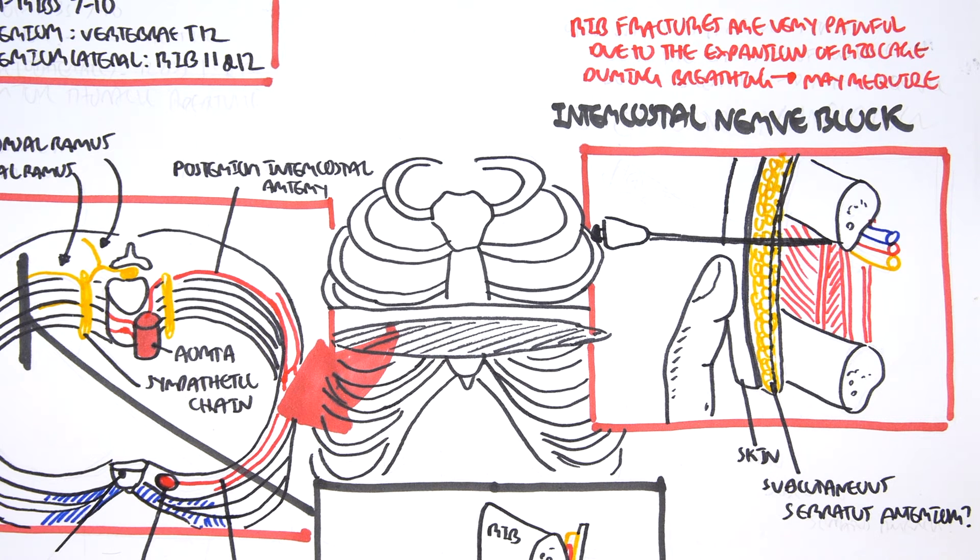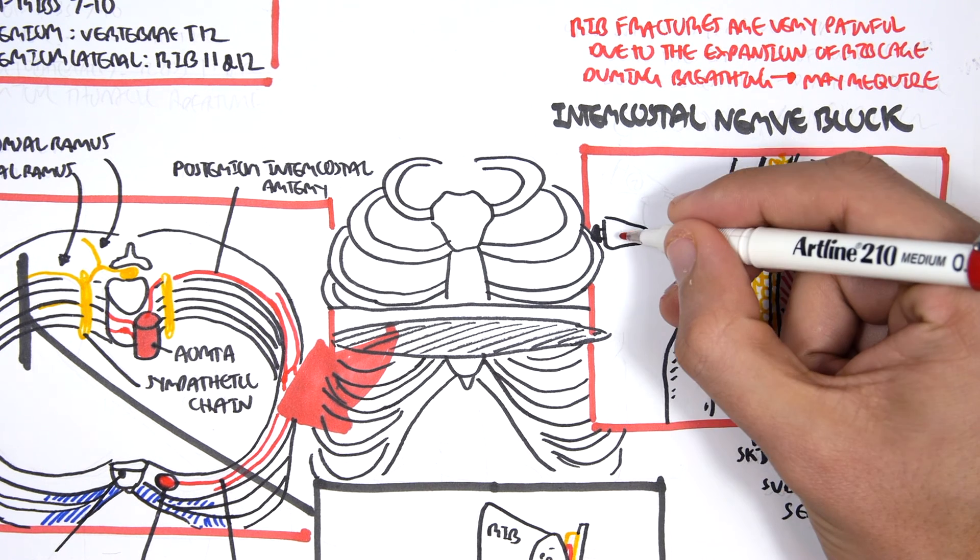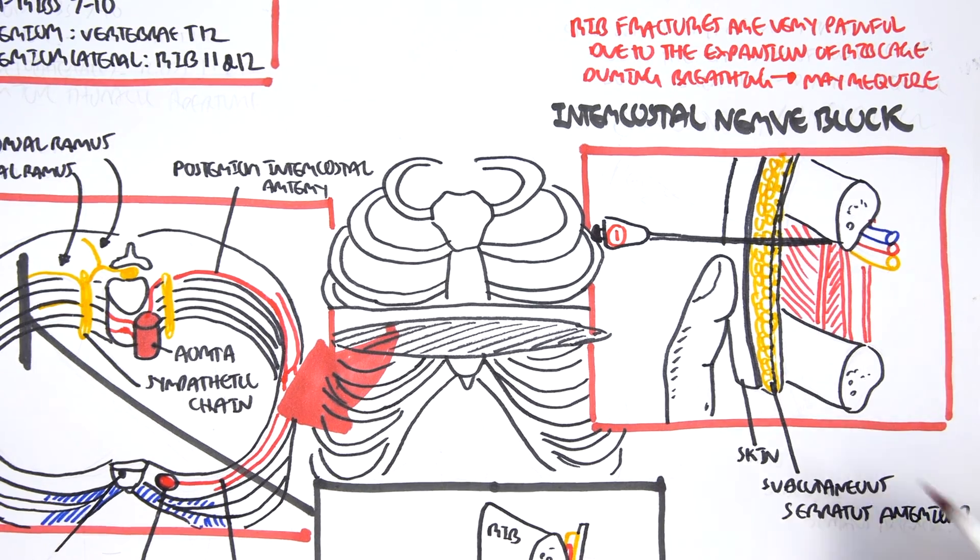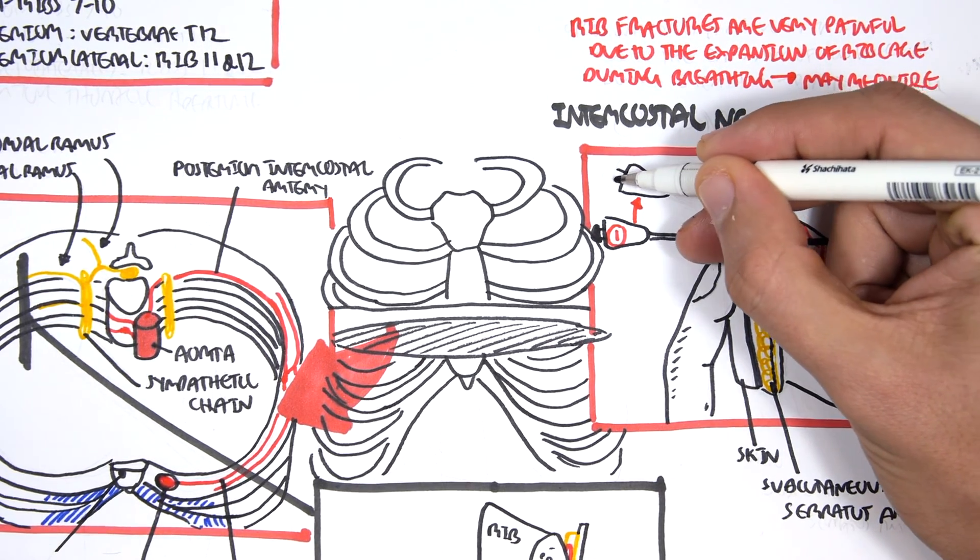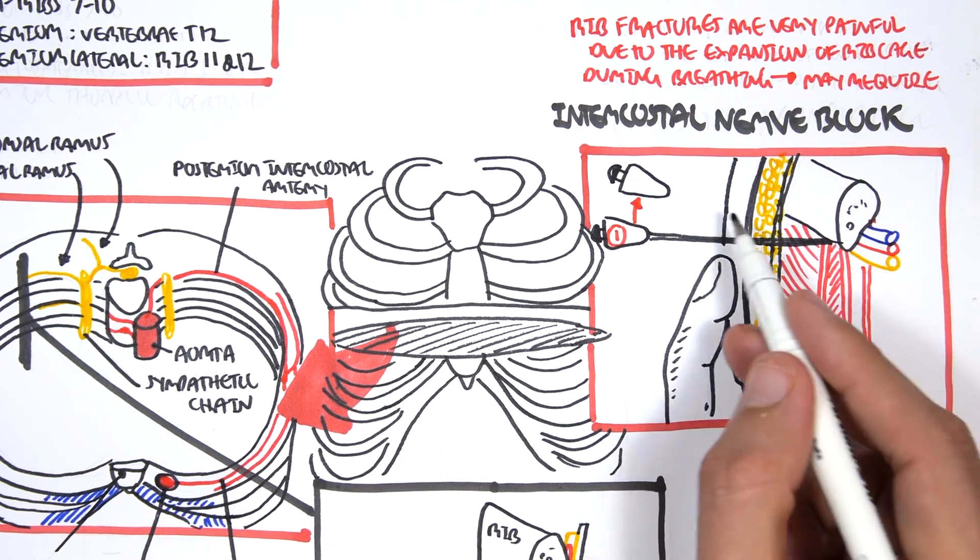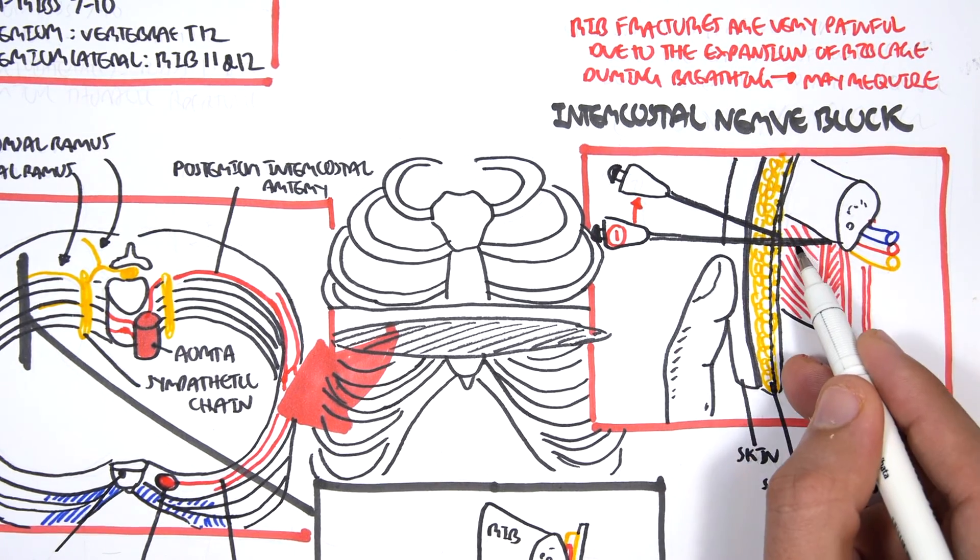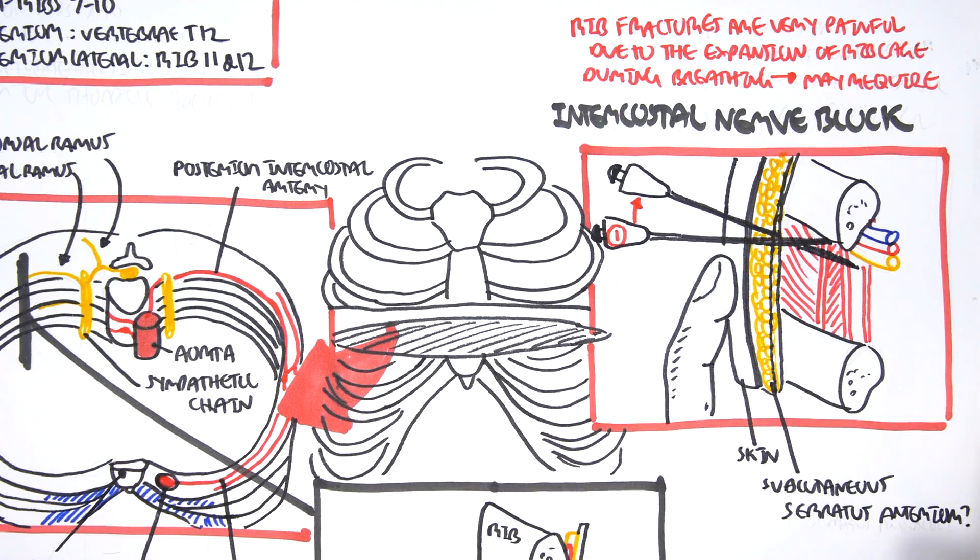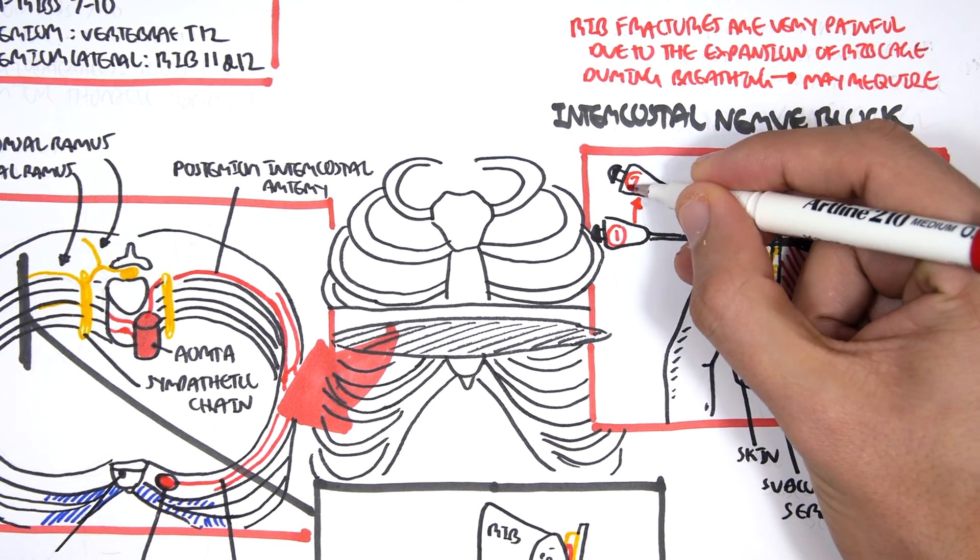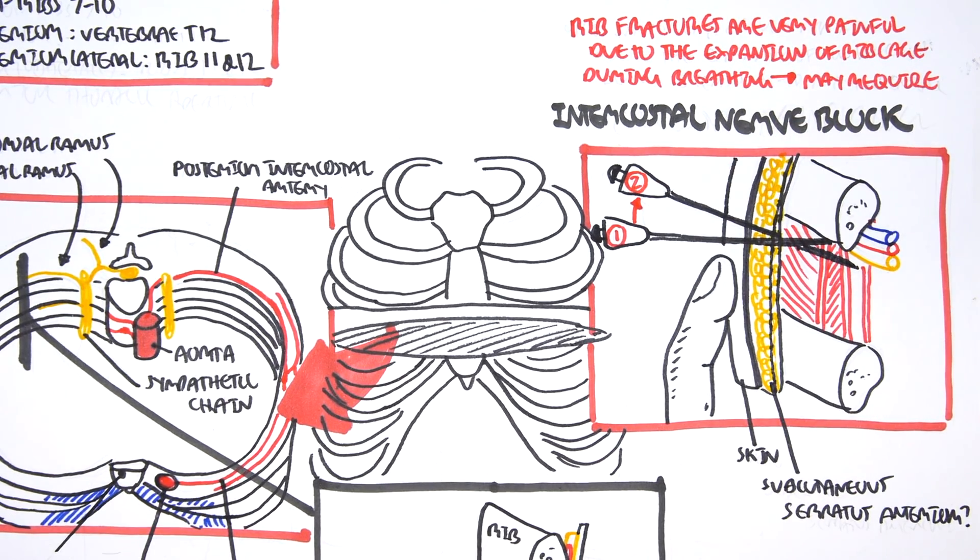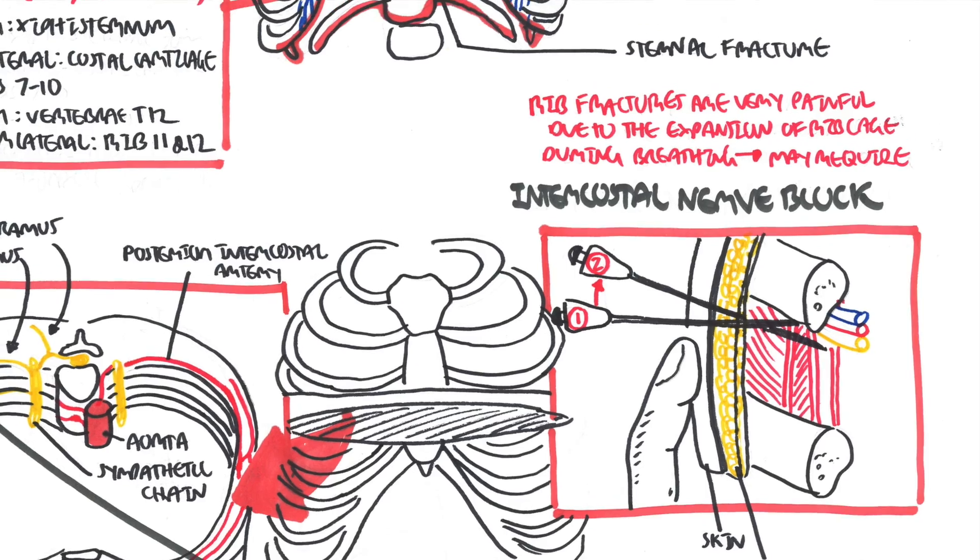So that is why in the intercostal nerve block, we find the lower margin of the rib, of that particular rib. We find it. We insert the needle inside. That's step one. And then just before, when we find the lower margin, then we tilt it slightly down. And that way we will definitely know that we are targeting the nerve most likely. And then we inject the anesthetic. And essentially this way we are blocking that nerve, blocking the pain now without damaging any structures, damaging the veins or the arteries.